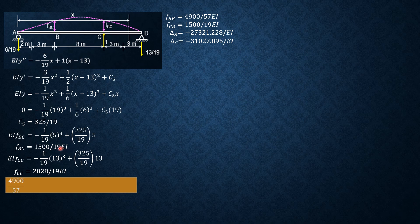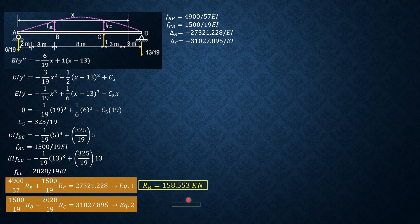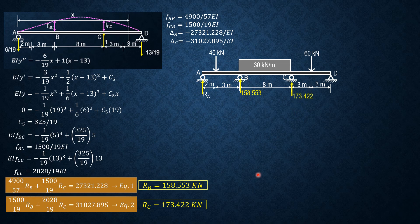Let's now establish the compatibility equations. First equation: fBB·RB plus fCB·RC plus δB equals 0. Second equation: fCB·RB plus fCC·RC equals 31,027.895. Solving these two equations simultaneously, we get RB equals 158.553 kN and RC equals 173.422 kN. Then RA and RD are solved by statics.